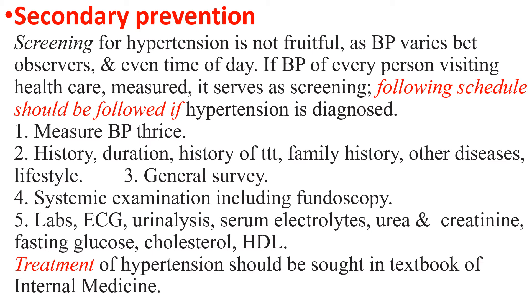Secondary prevention for hypertension: screening is not straightforward as blood pressure varies between observers and even time of day. If blood pressure of every person visiting healthcare is measured, the following schedule should be followed when hypertension is diagnosed: measure blood pressure three times; take history including duration, history of treatment, family history, other diseases, and lifestyle; perform general examination and systemic examination including fundoscopy; perform lab tests including ECG, urinalysis, serum electrolytes, urea, creatinine, fasting glucose, cholesterol, and HDL. Treatment of hypertension: refer to internal medicine.